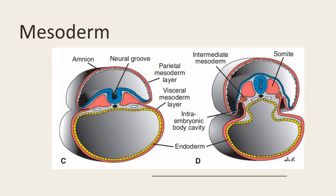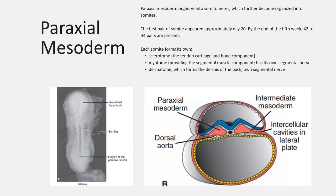At day 20 and day 21, you will see that the mesoderm has already split, particularly the lateral mesoderm splitting into the parietal plate mesoderm and also the visceral mesoderm layer. The yellow structures are the endodermal structures and the blue ones are the ectodermal structures.